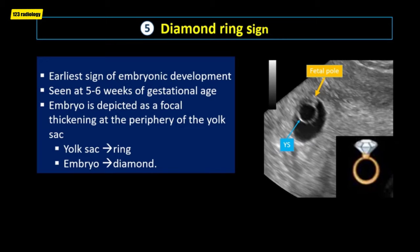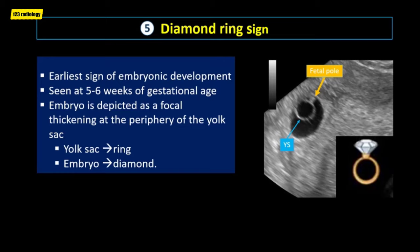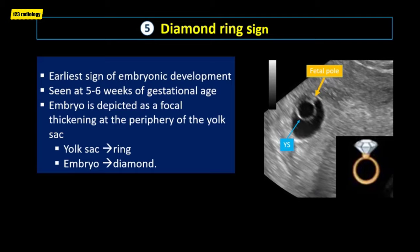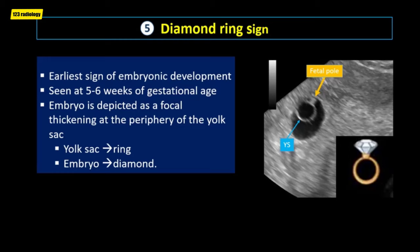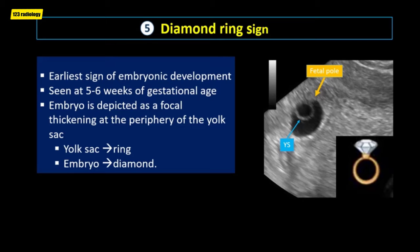The diamond ring sign is the earliest sign of embryonic development. It is seen at 5 to 6 weeks of gestational age by transvaginal ultrasound. The embryo is depicted as a focal thickening at the periphery of the yolk sac. This appearance is referred to as the diamond ring sign, where the yolk sac represents the ring and the embryo represents the diamond.